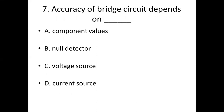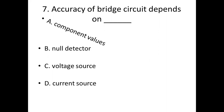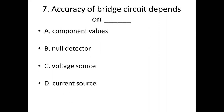Seventh bit. Accuracy of bridge circuit depends on dash. Option A: component values. Option B: null detector. Option C: voltage source. Option D: current source. Answer: Option A, component values.